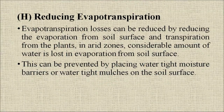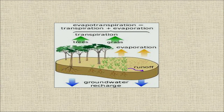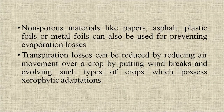Reducing evapotranspiration: evapotranspiration losses can be reduced by reducing evaporation from soil surface and transpiration from plants. In arid zones, considerable amounts of water are lost in evaporation from soil surface. This can be prevented by placing watertight moisture barriers or watertight mulches on the soil surface. Non-porous materials like paper, asphalt, plastic foils or metal foils can also be used for preventing evaporation losses.